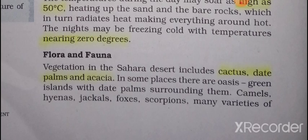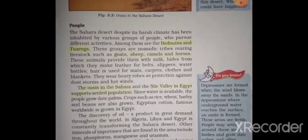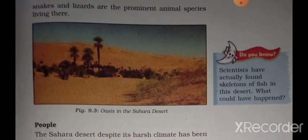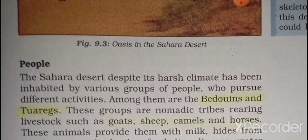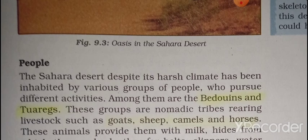Fauna means animal species. Animals found in the Sahara include the camel — which is also called the 'ship of the desert' — along with hyenas, jackals, foxes, and scorpions. Scientists have actually found skeletons of fish in this desert, which means once upon a time there were big ponds, lakes, and rivers here.